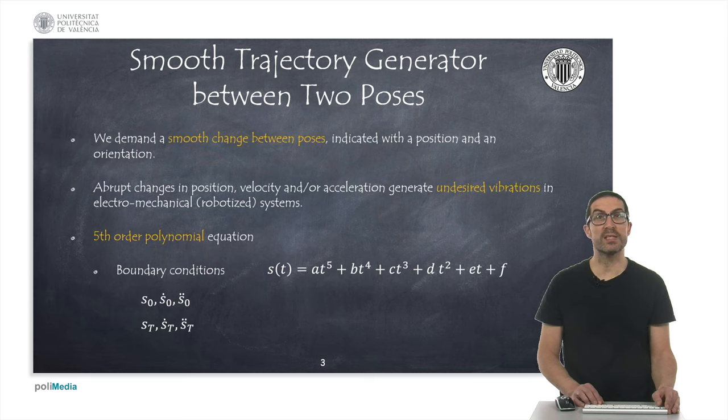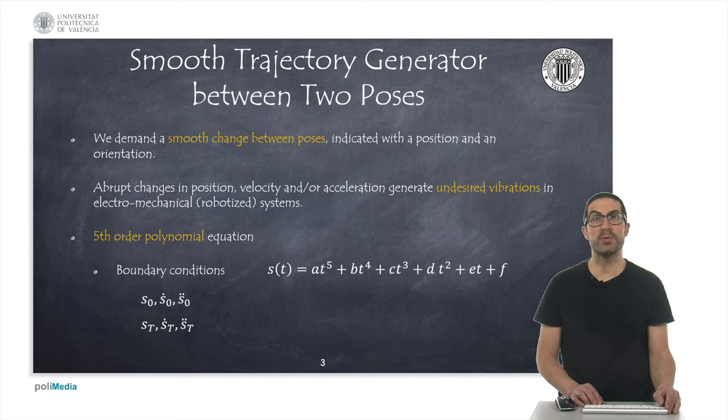In this sense, the 5th order polynomial equation allows us to arbitrarily specify any initial and final position, velocity and acceleration for a given time interval. This equation has six coefficients that we must compute, as we will see on the next slide.